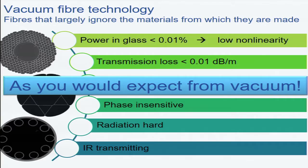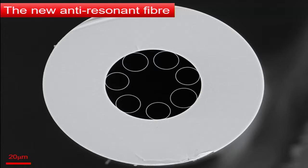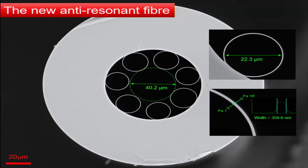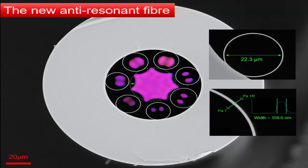Here's what one looks like — this is the most amazing thing. This is about the width of your hair across here. These little cylinders inside are a 40 micron mode. These little things are called anti-resonant rings, meaning there's no light in them — they're exactly the wrong size to allow light to go into them. And there's the thickness: 359.6 nanometers. That's not nautical miles.